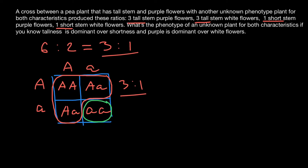So we know the unknown plant has to be tall and heterozygous, just like the known plant, which we also know is tall. Now let's talk about the second characteristic, which is color of the flowers.